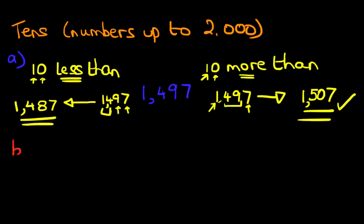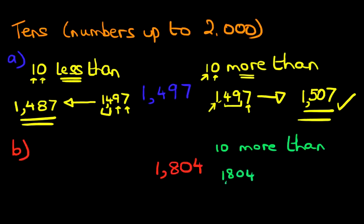Let's work through our second example. Suppose we had the number 1,804. So what is 10 more than 1,804? First of all, let's write the number down. Are we going forwards or backwards? It's more than, so we're counting forwards. And we're going to count forwards by 10.